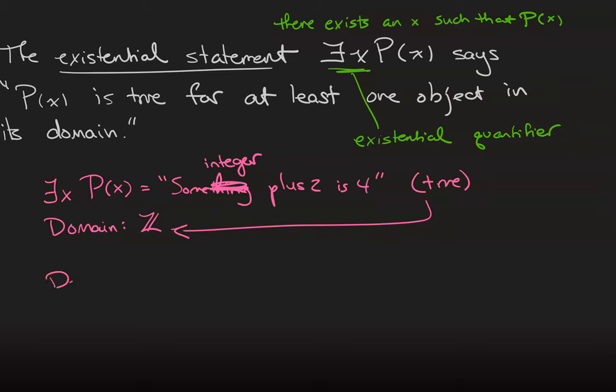If we change the domain to be the set of negative integers, then the statement some negative integer plus 2 equals 4 is of course false.